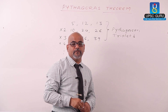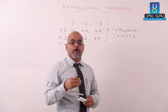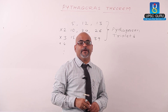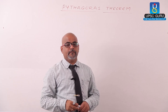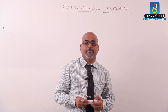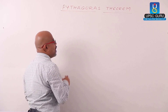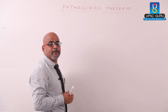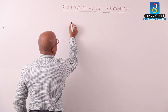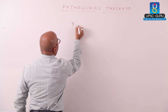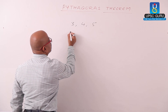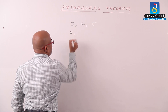Now we move further. We'll check some tricks — shortcuts to find Pythagorean triplets. First, we look at Pythagorean triplets where the smallest number is an odd number. For example, the first common Pythagorean triplet is 3, 4, and 5, which we already know. Suppose we start with 5.